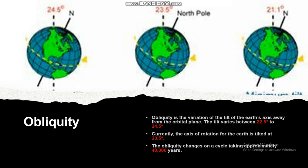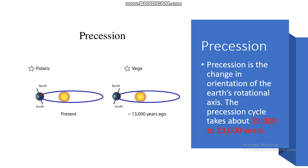The current tilt of the earth is 23.5 degrees. Precession is the change in orientation of the earth's rotational axis, and the precession cycle takes about 19,000 to 23,000 years. As seen in the right portion of the image, 13,000 years ago the north pole of the earth pointed to the right and the south pole to the left, while in the present, shown on the left side of the image, the north pole points to the left and the south pole points to the right.